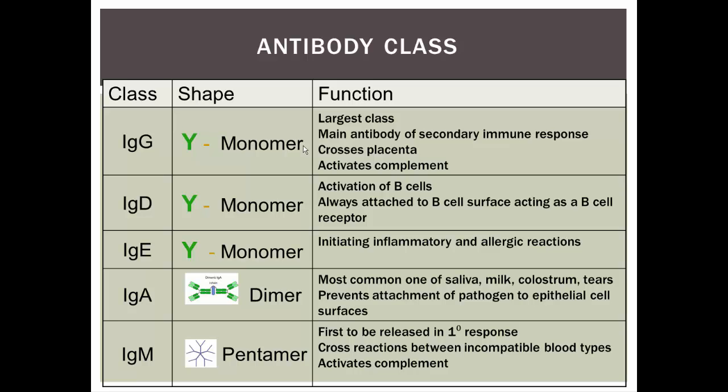Then there's IgA. The IgA structure is a dimer — basically two Y-shapes with their constant regions butted up against each other. This is the antibody class found most commonly in saliva, breast milk, colostrum — which is what a baby gets when nursing for the first couple of days — and in tears as well. It prevents attachment of pathogens to epithelial cell surfaces, keeping pathogens away from epithelial surfaces.